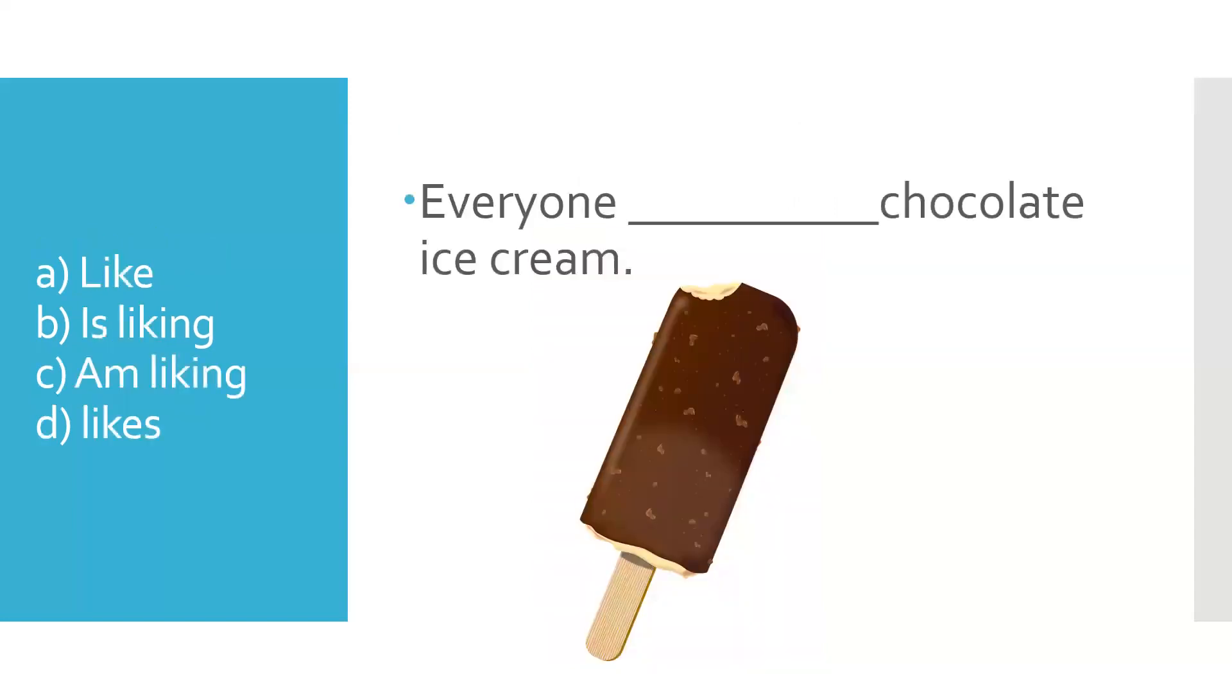All right. What about this one? Like, is liking, am liking, likes. A hint for you. Everyone, maybe a lot of people, but it is considered as one. One group. And so, your answer should be, likes. Everyone likes chocolate ice cream.